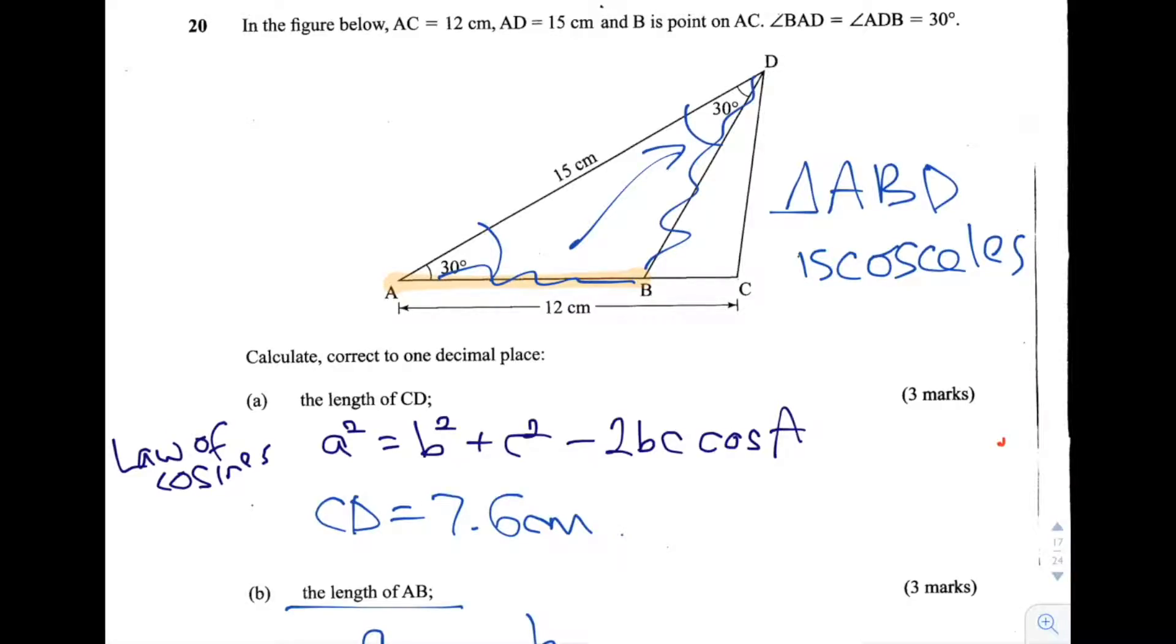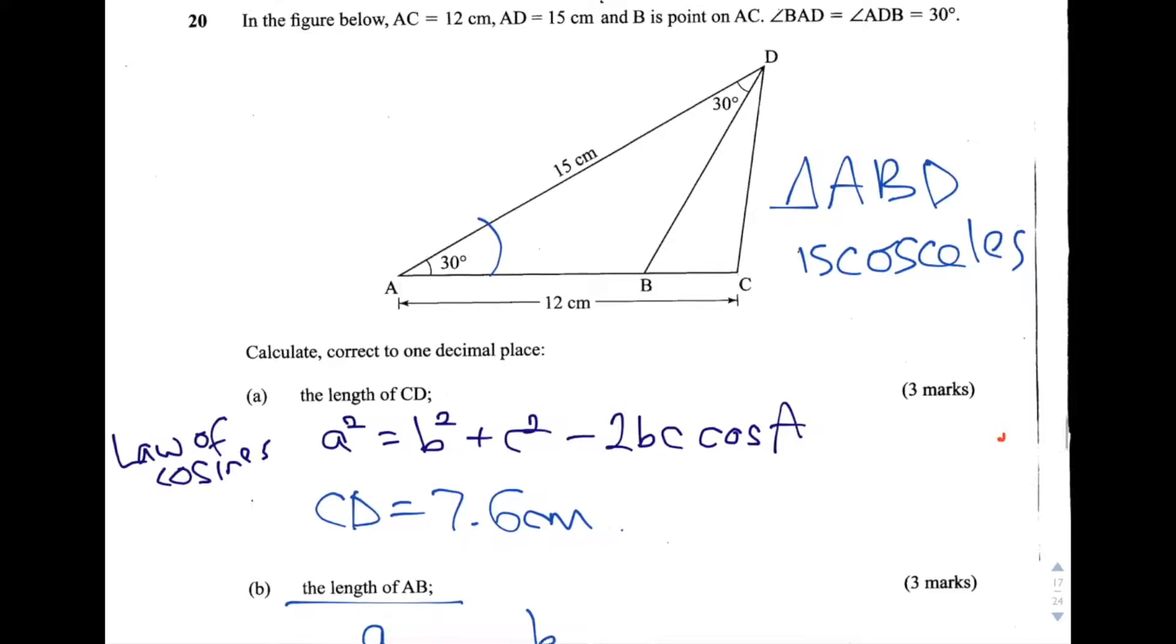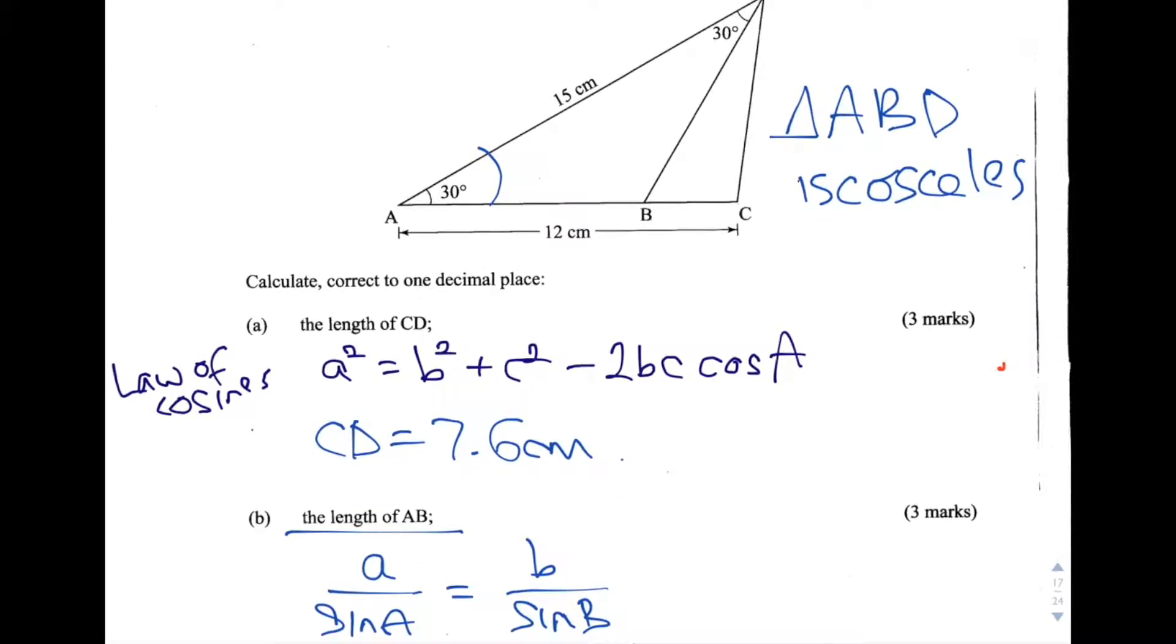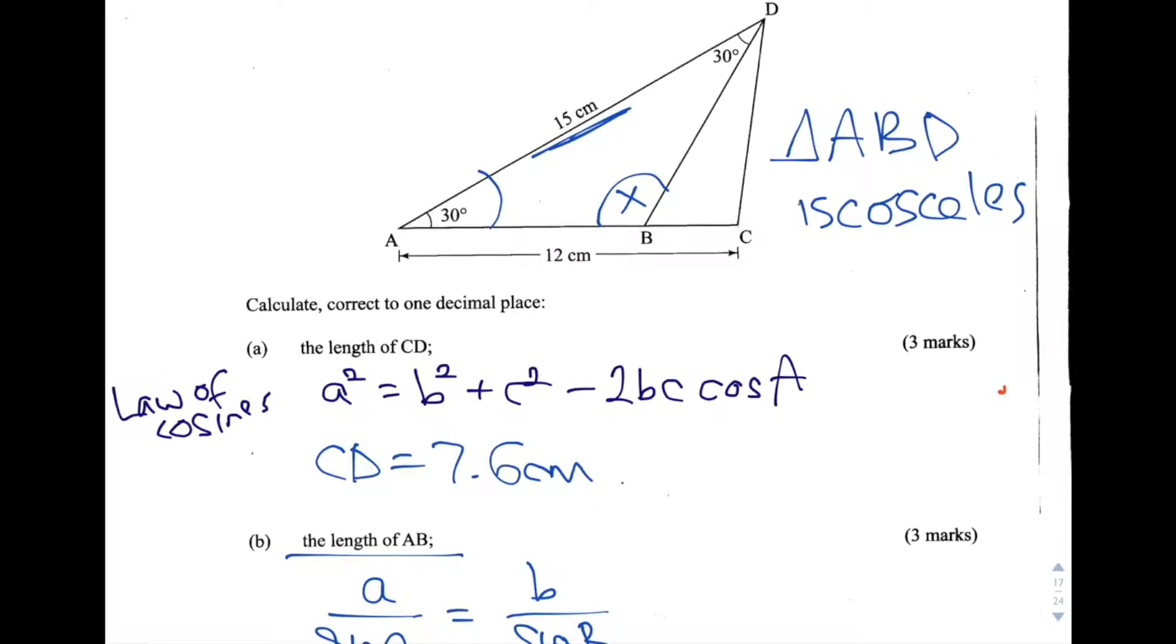For DB, the opposite angle is also 30 degrees. That's how we know that if we have an isosceles triangle where two of the lengths are equal, we also know that two angles are the same because the ratio of the length to the sine of the angle is the same. So that also means that the ratio of this side, 15 centimeters, to the sine of this angle—let's call it X—is also going to be equal to the other two ratios for the sides BD and AB.